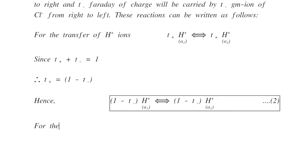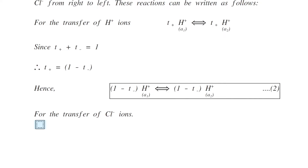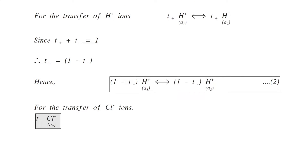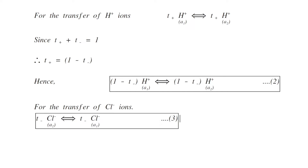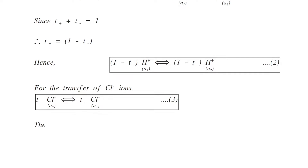For the transfer of chloride ions, T⁻ of chloride ions of activity A2 is transferred to T⁻ of chloride ions of activity A1. This is equation number 3. As all processes occur simultaneously, the net cell reaction is given by the addition of equations 1, 2, and 3.